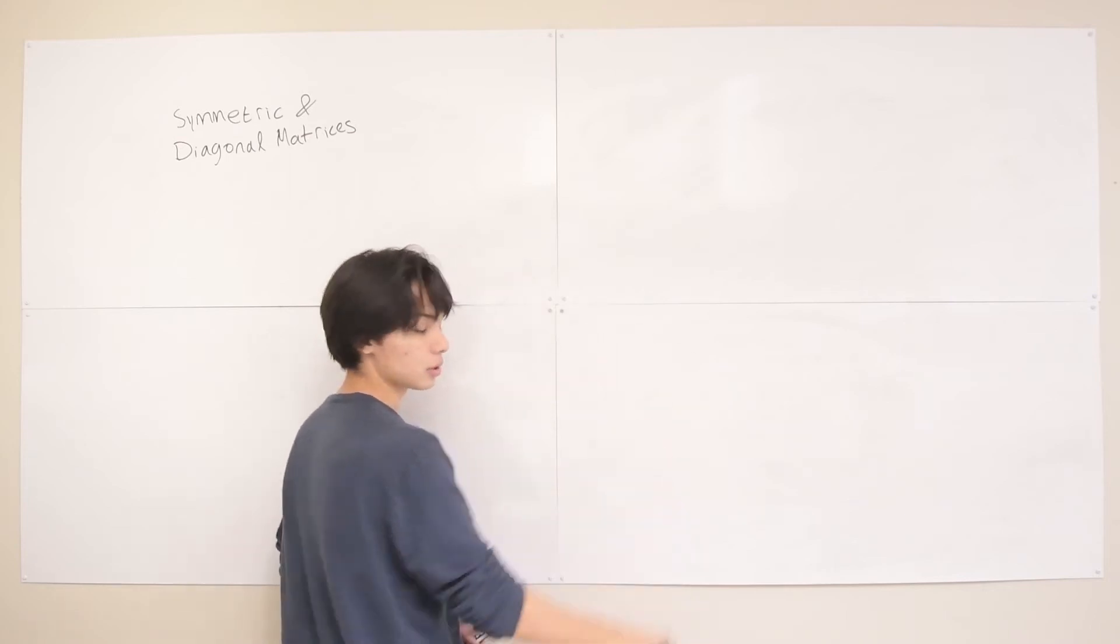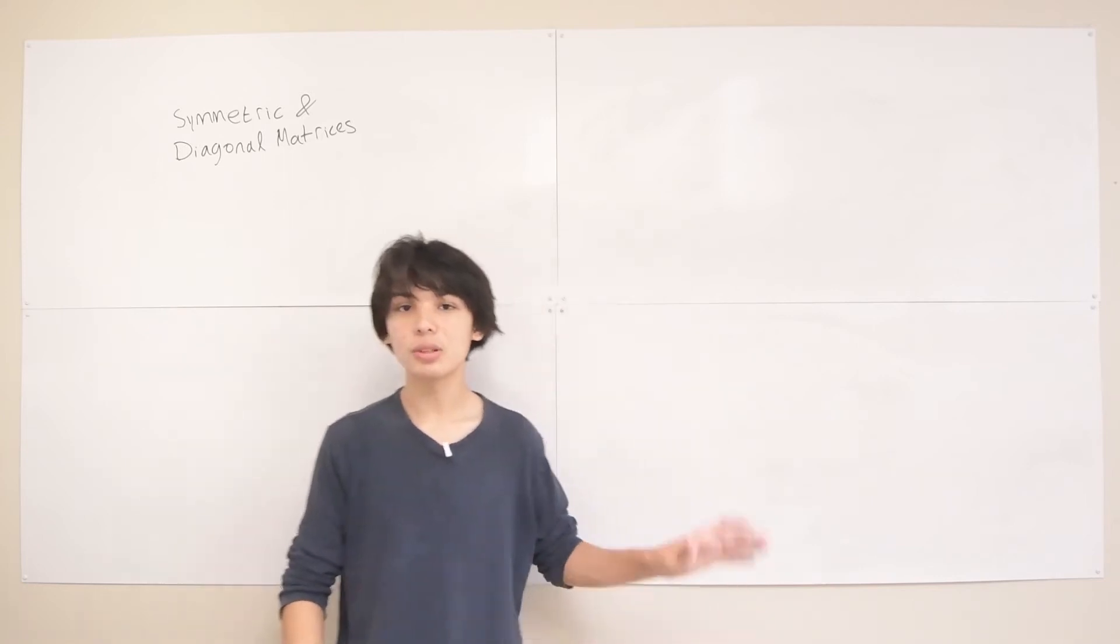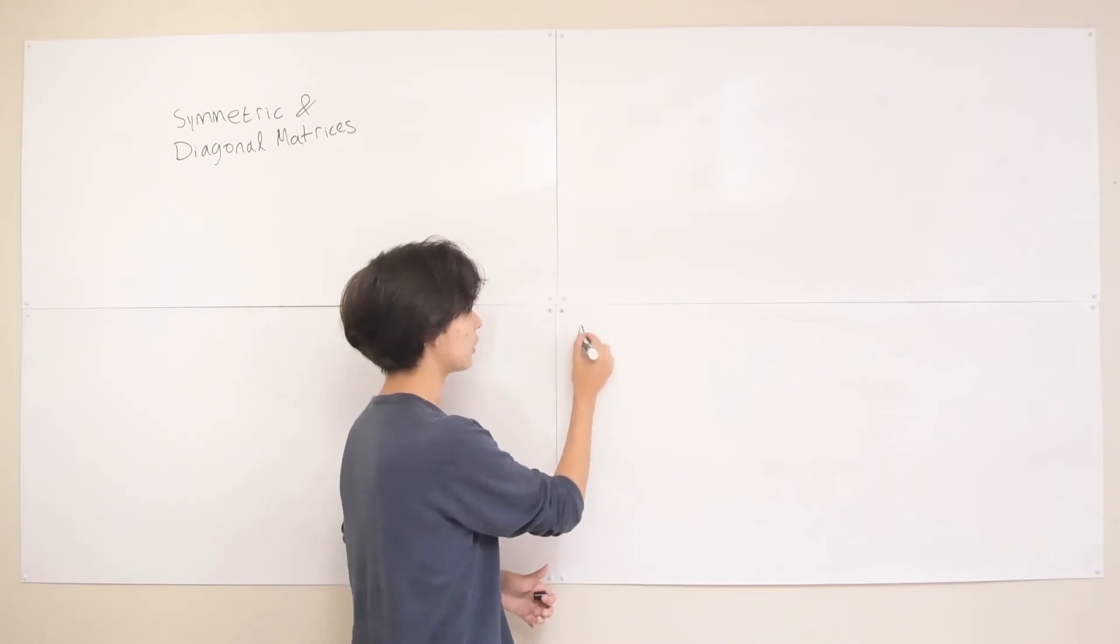All right, so that basically covers symmetric matrices. Now we want to talk about diagonal matrices. And one more thing about symmetric matrices and kind of why we talk about them a lot is because having the property that A transpose equals A simplifies a lot of matrix equations and that sort of thing.